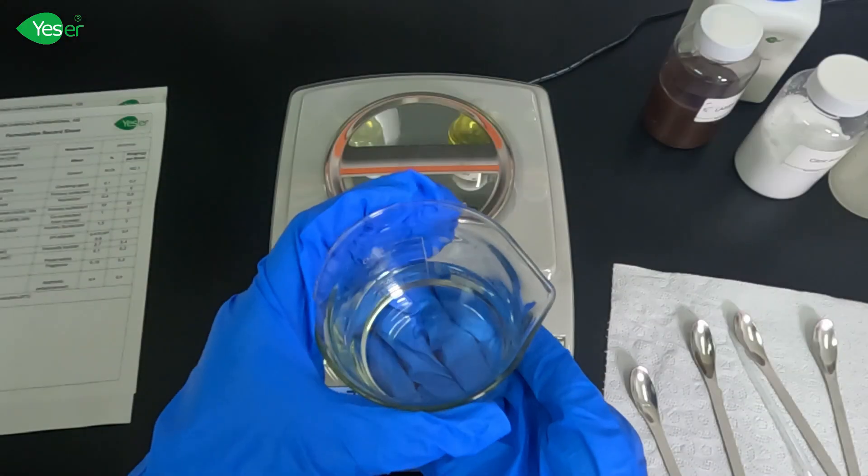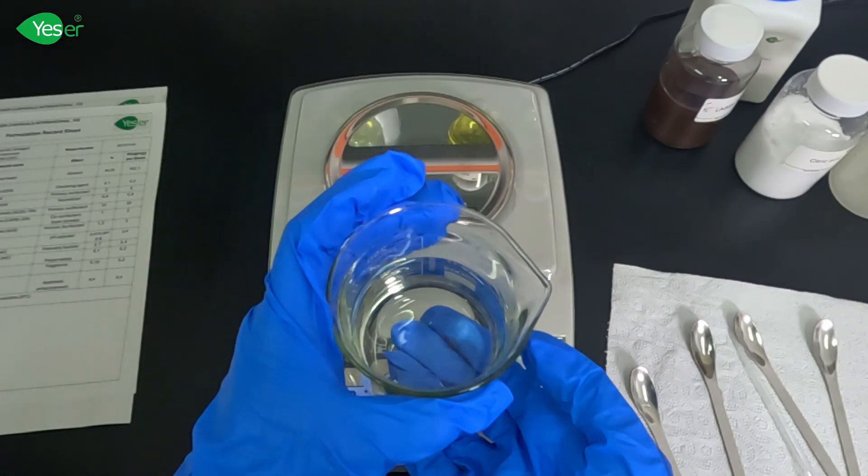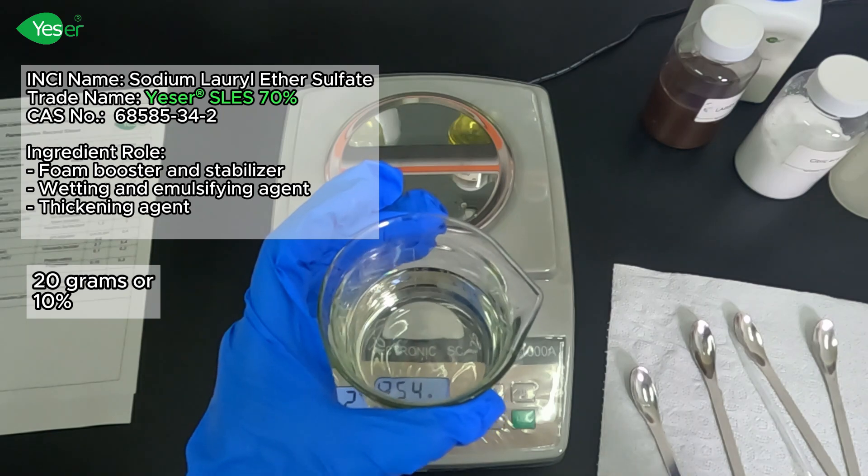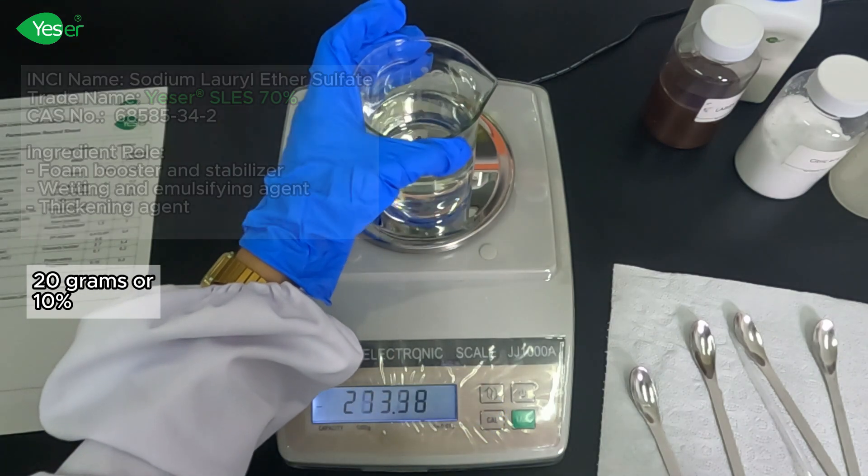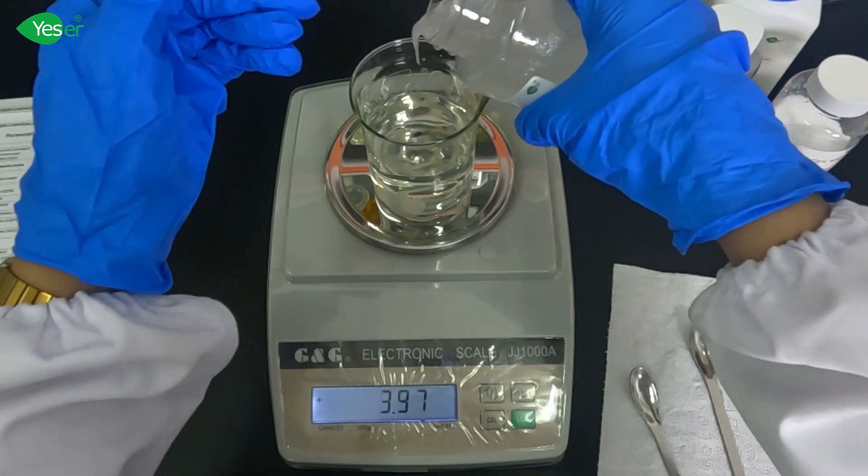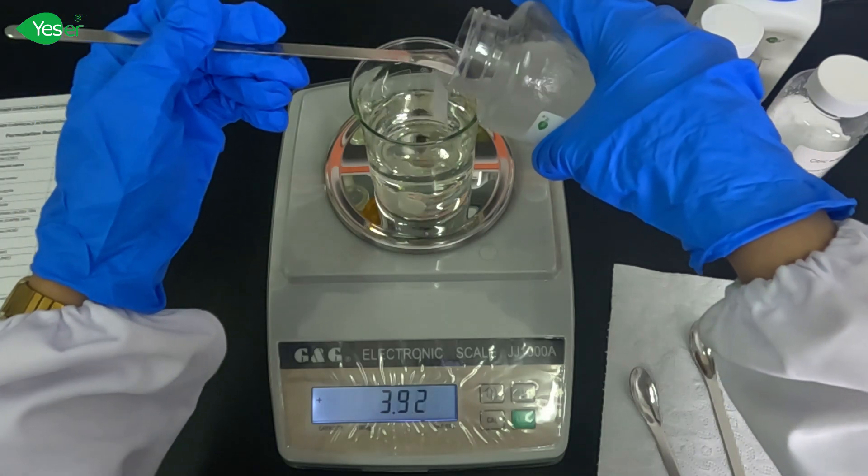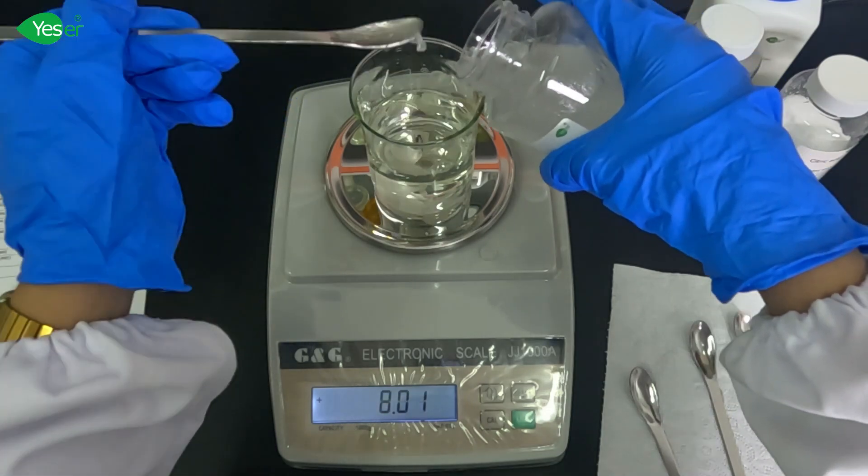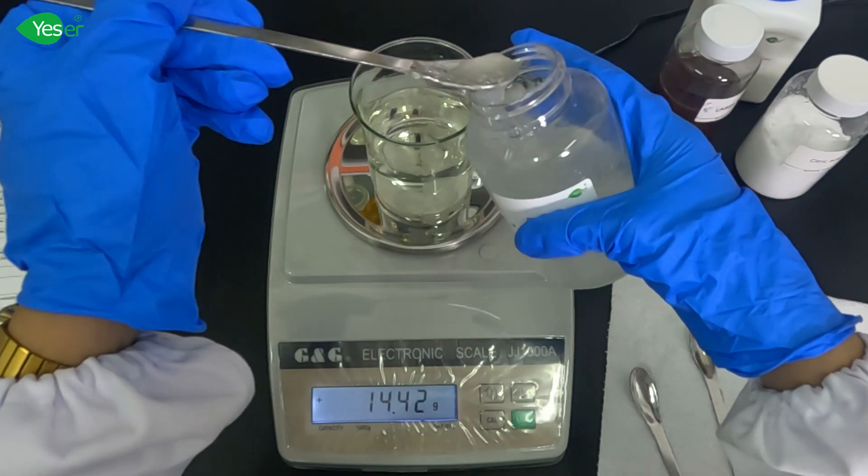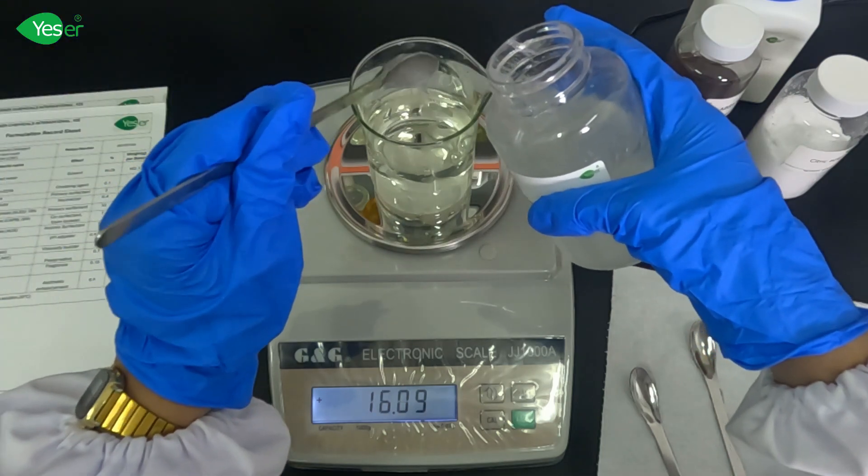Now that our LABSA 96% is completely dissolved, we will now add our SLE 70%, weigh 20 grams of this or 10% for the formula. This is another cost-effective surfactant that contributes to both cleaning power and foaming. This is widely used due to its excellent performance and affordability.